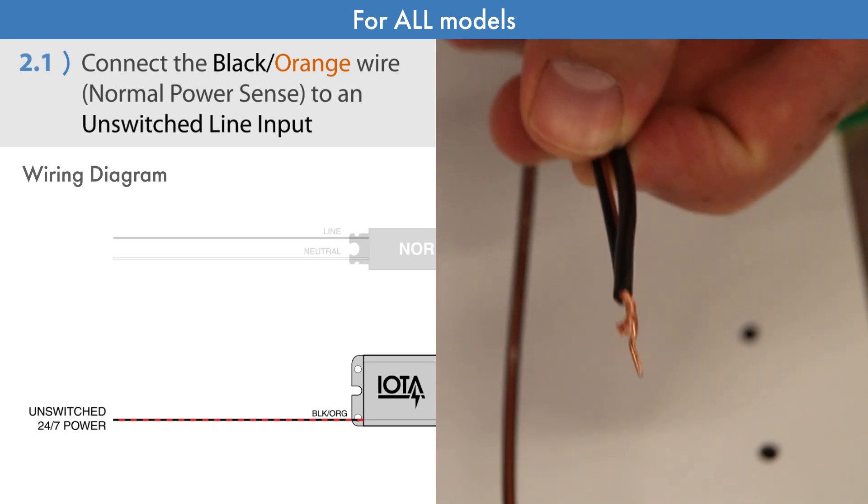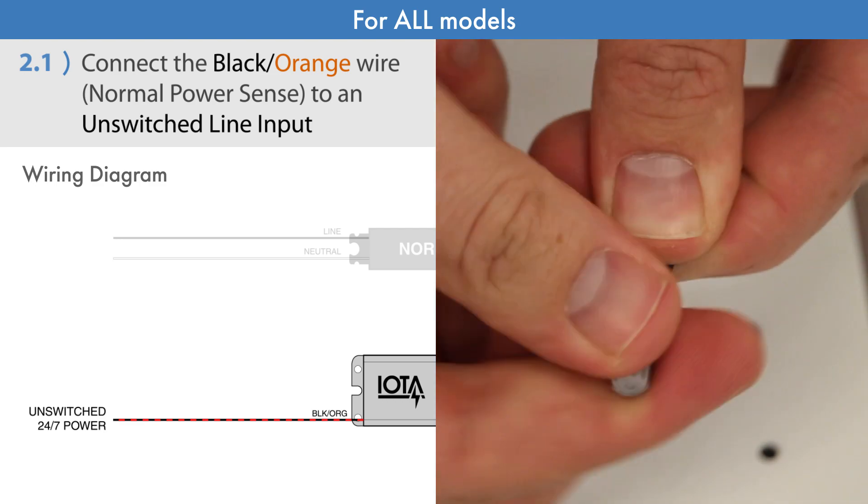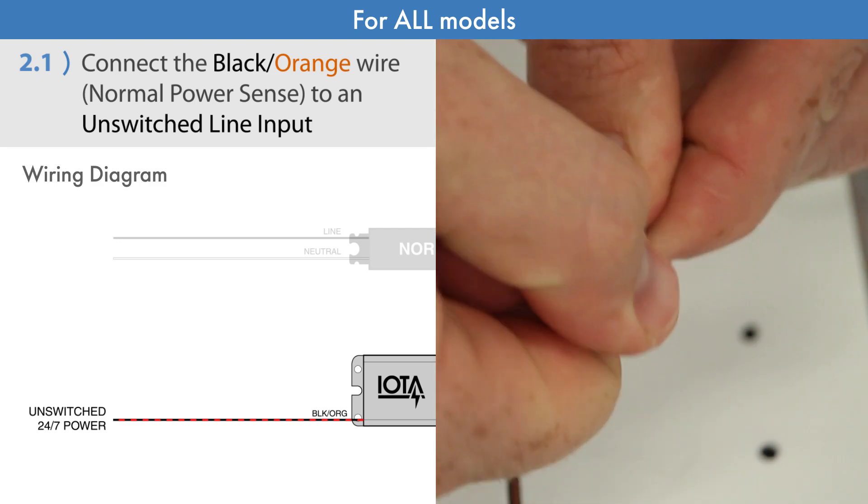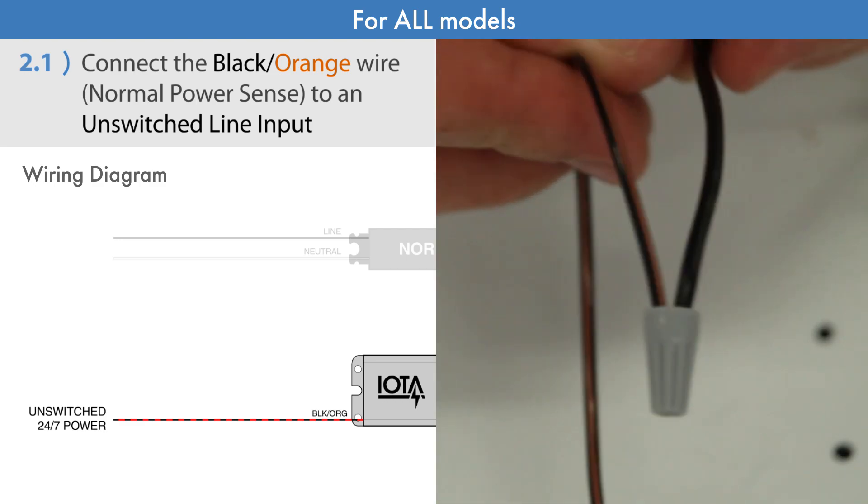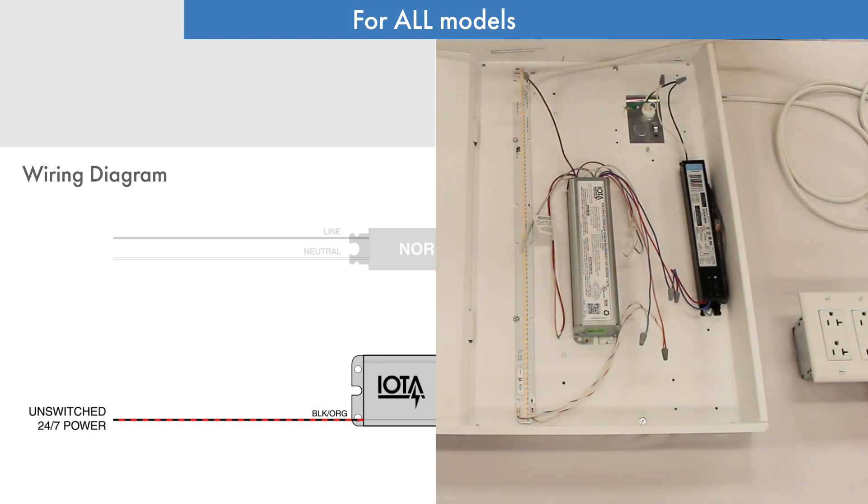If you are using a wall switch on your LED fixture, make sure that the black-orange wire is connected ahead of the switch. The next steps are for ILB-CP standard models only.